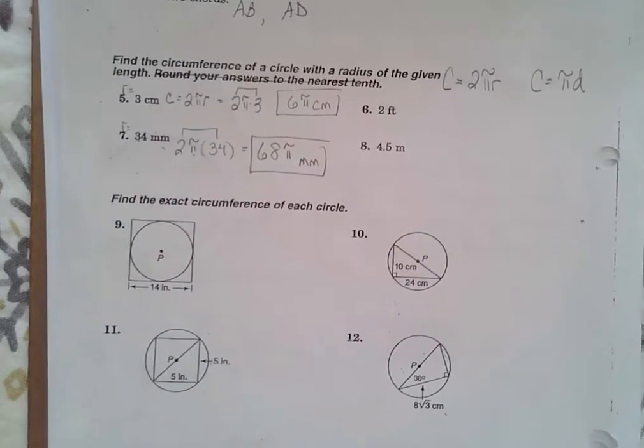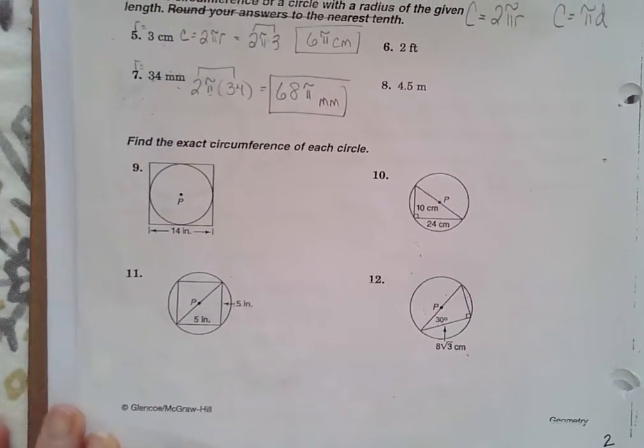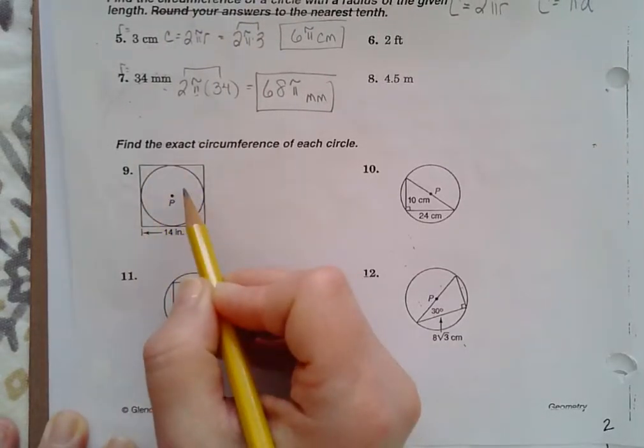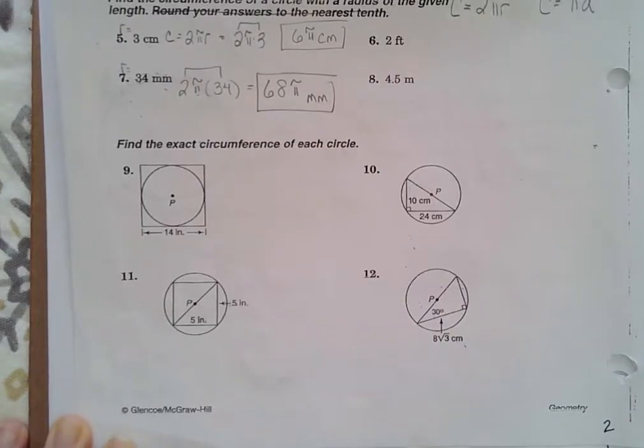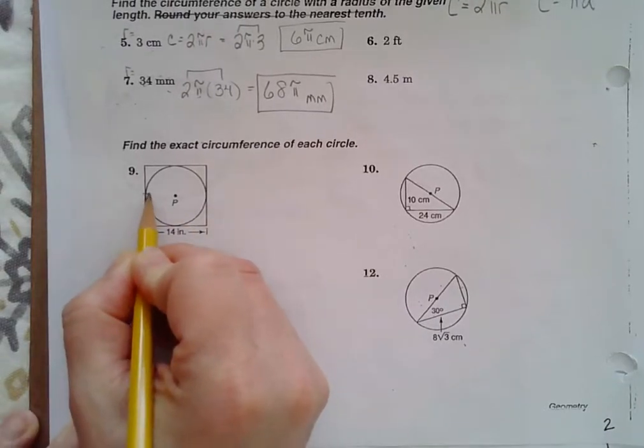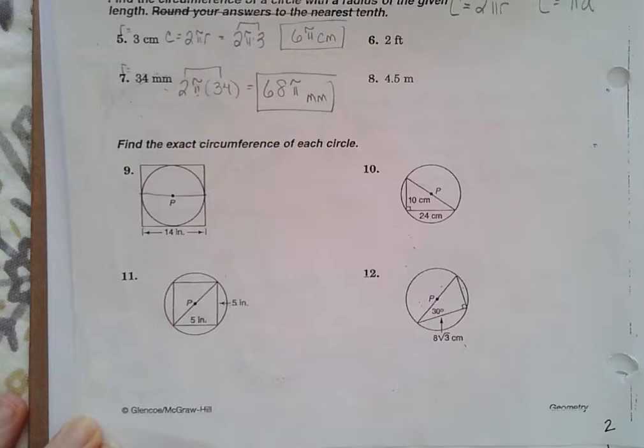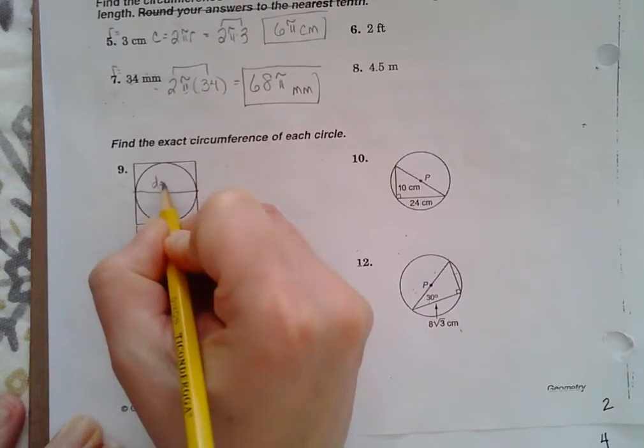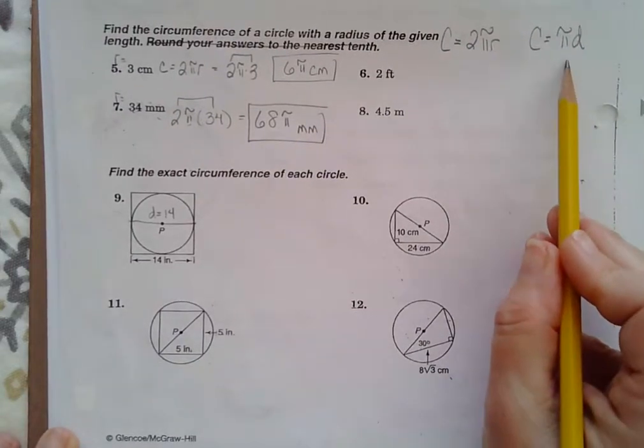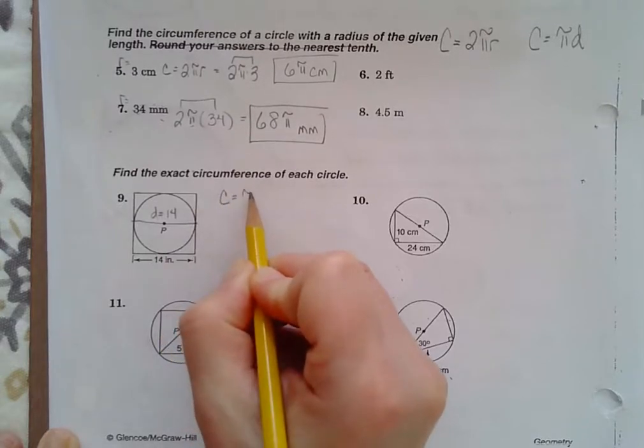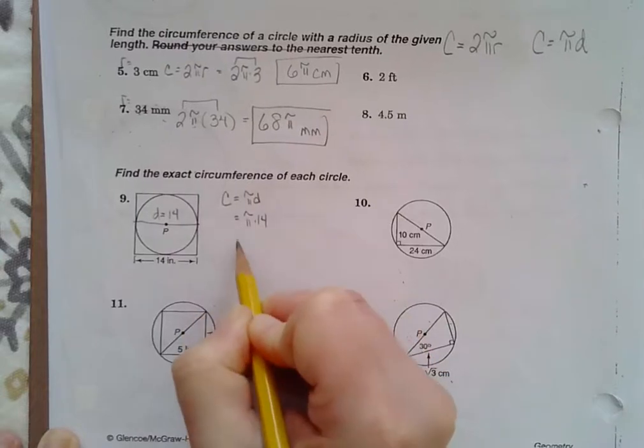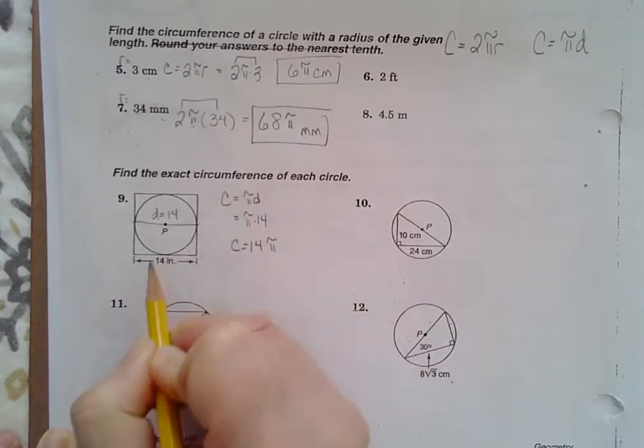Same on the right side. Moving down from number 9, we want to find the exact circumference of each circle. This circle is inside a square. Your square has side 14, which means that that is your diameter. So here we know that our diameter is equal to 14. If we want to know circumference, we can use this formula. Circumference is equal to π times diameter, which is π times 14. Circumference is 14π inches.